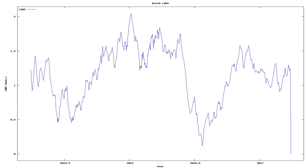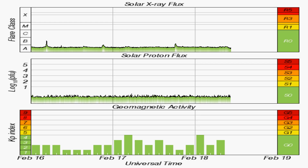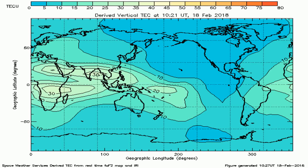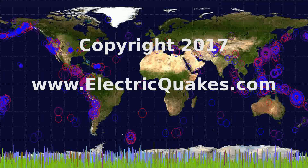And now we see changes in the speed of the rotation of the Earth, along with solar X-ray flux, solar proton flux, geomagnetic disturbances, and another graph of total electron content across the Earth. That's the report for today. Please remember to like and subscribe and visit our Patreon at Geopilot. Thank you.